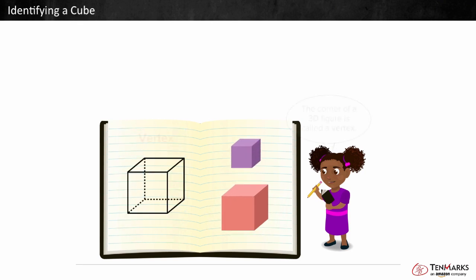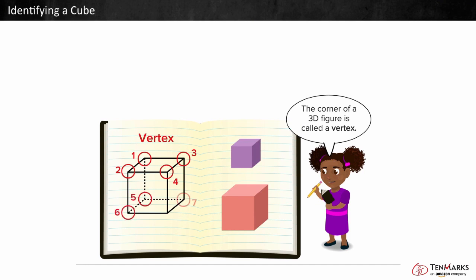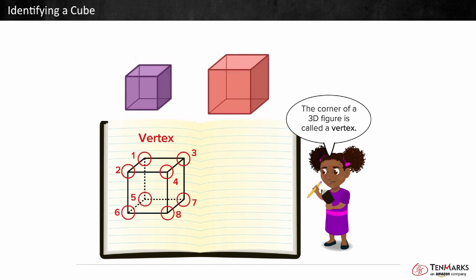The corner of a 3D figure is called a vertex. It is where edges meet. A cube has 1, 2, 3, 4, 5, 6, 7, 8 vertices.